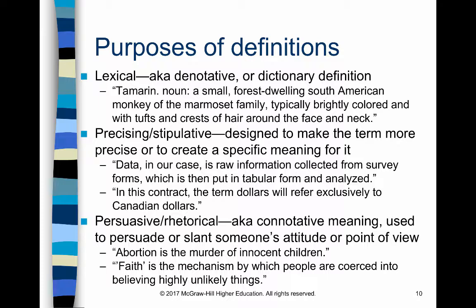Precising or stipulative definitions are designed to make a term even more precise than a lexical definition, possibly stipulating exactly what it means in a particular situation. This is often done in scientific or business reports or academic papers. For example: 'Data in our case is raw information collected from survey forms, which is then put in tabular form and analyzed.' This defines 'data' to mean a specific thing and not any other meaning you might use in another context.